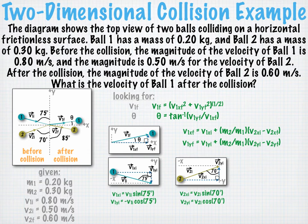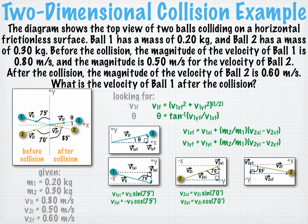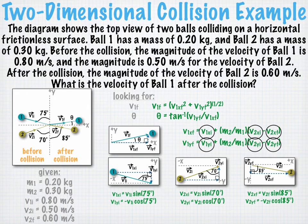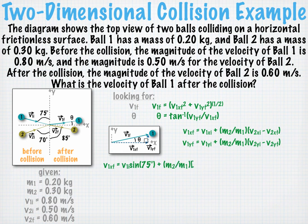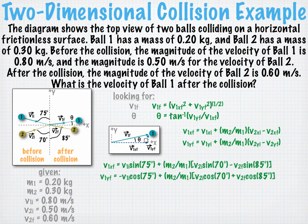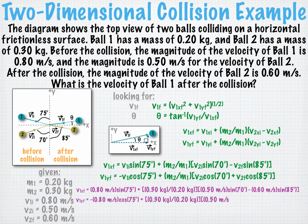And lastly, we have the final velocity of ball two. We start by drawing the x and y components of the vector. We can see that v2x final is equal to v2 final times the sine of 85 degrees, and v2y final is equal to minus v2 final times the cosine of 85 degrees. We'll now substitute these expressions into our equations. Doing so, we get an expression for v1x final and an expression for v1y final. Now we'll plug in our mass and velocity values into these expressions.